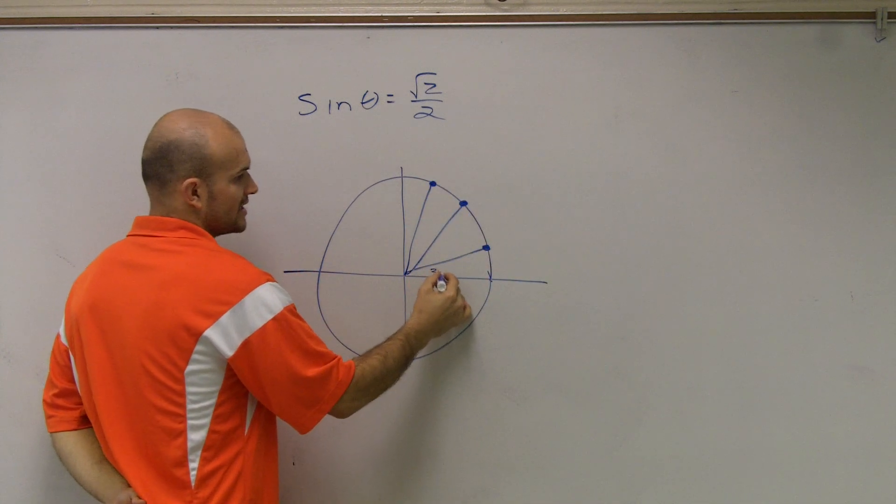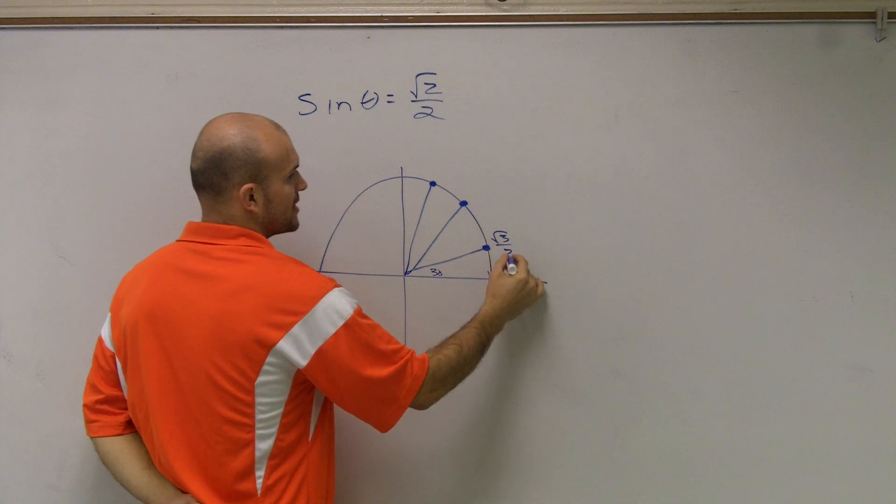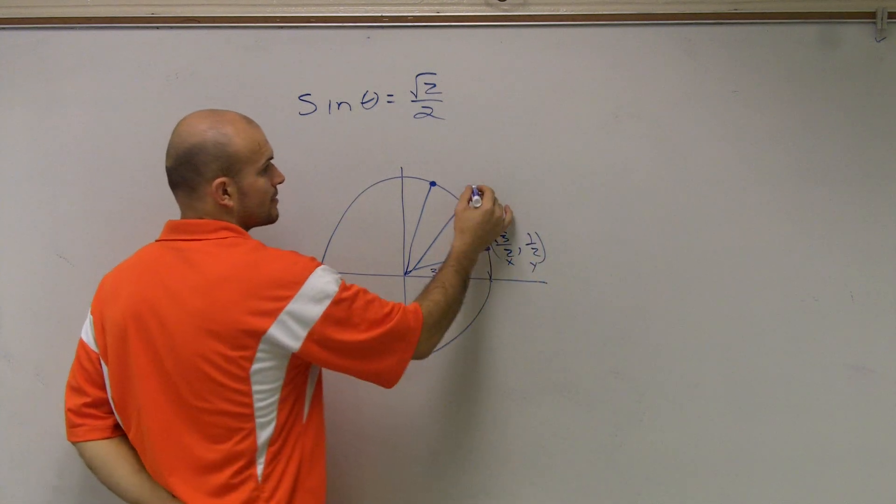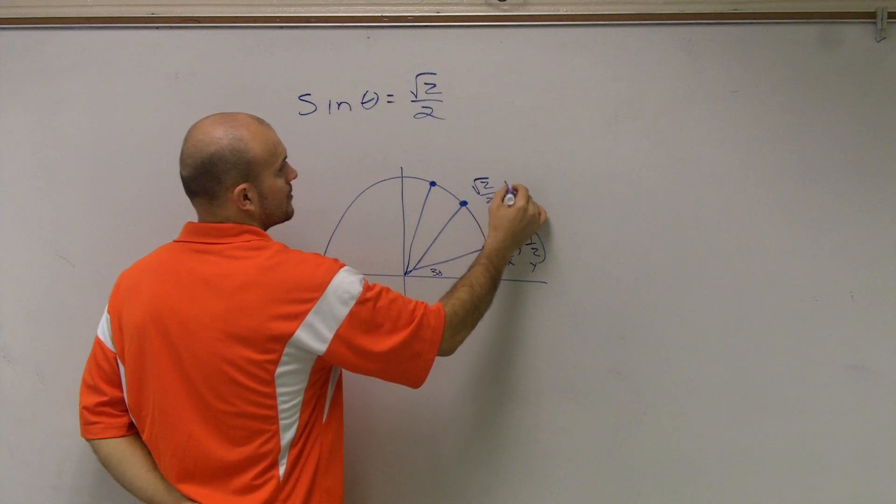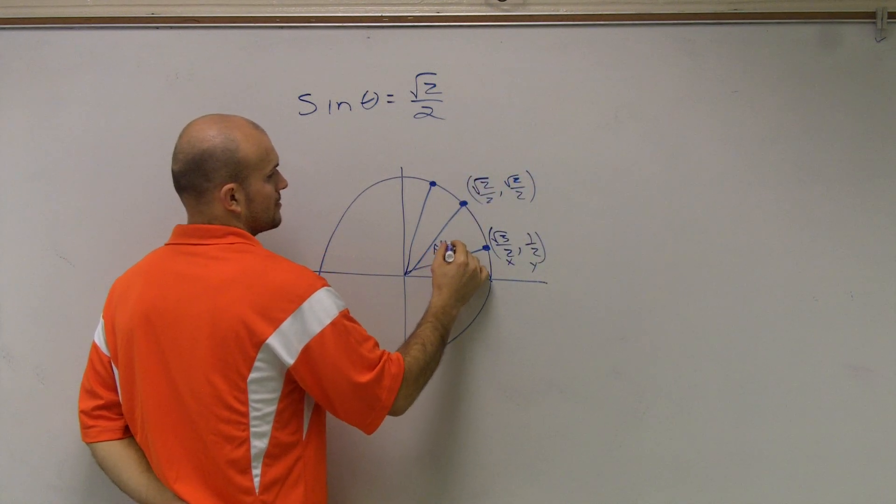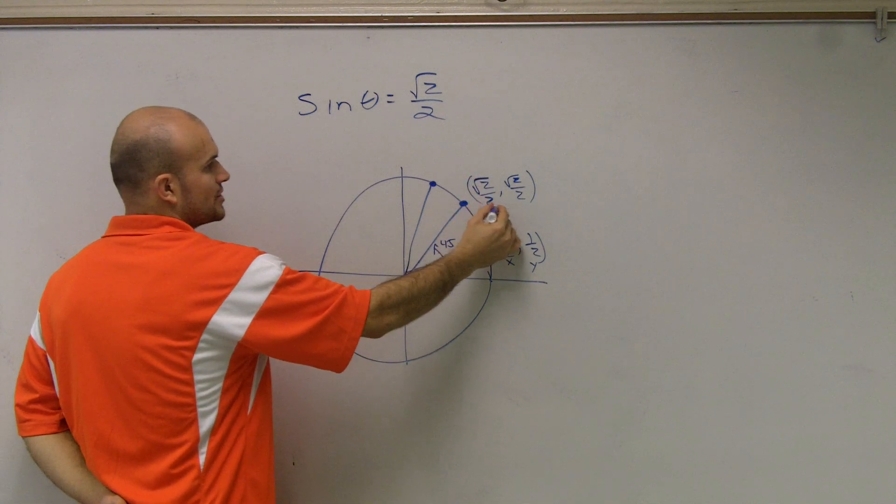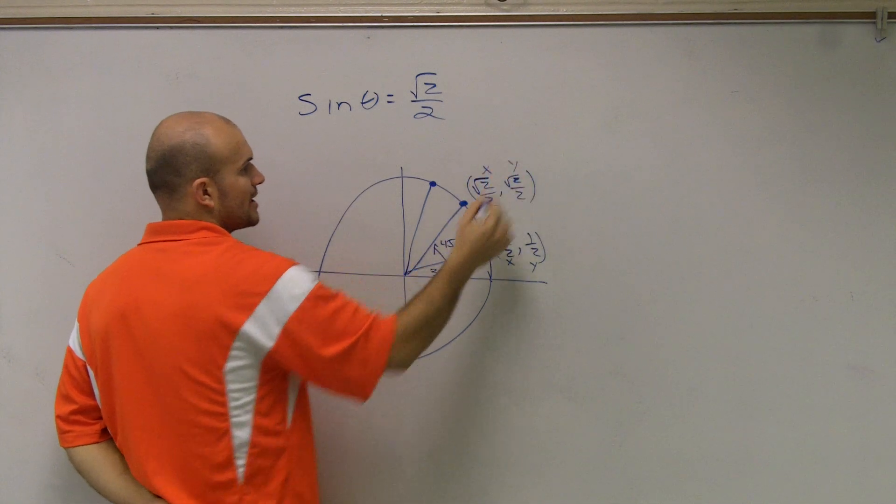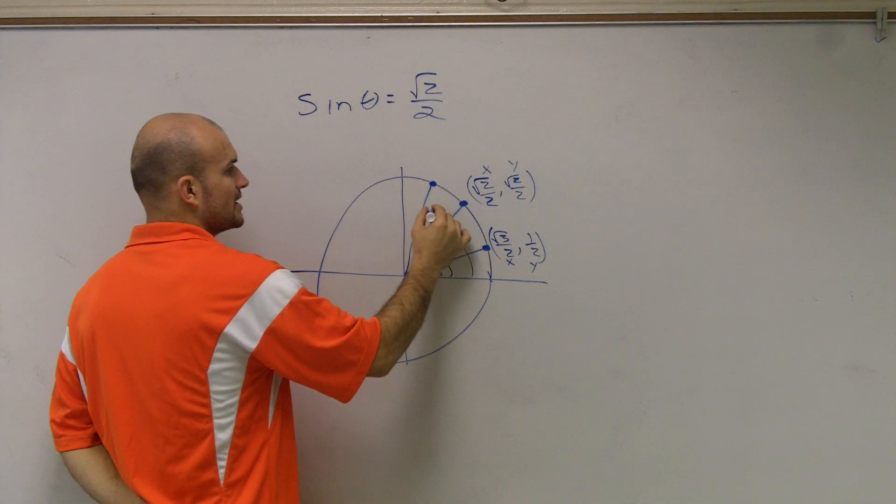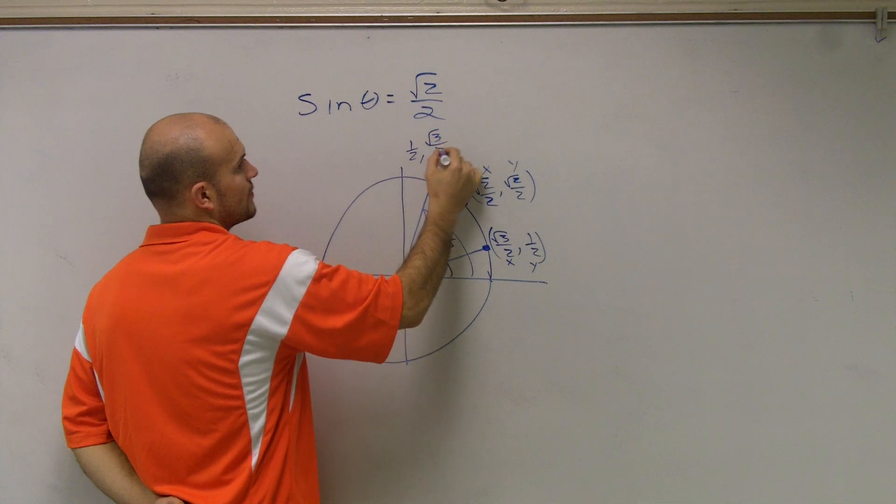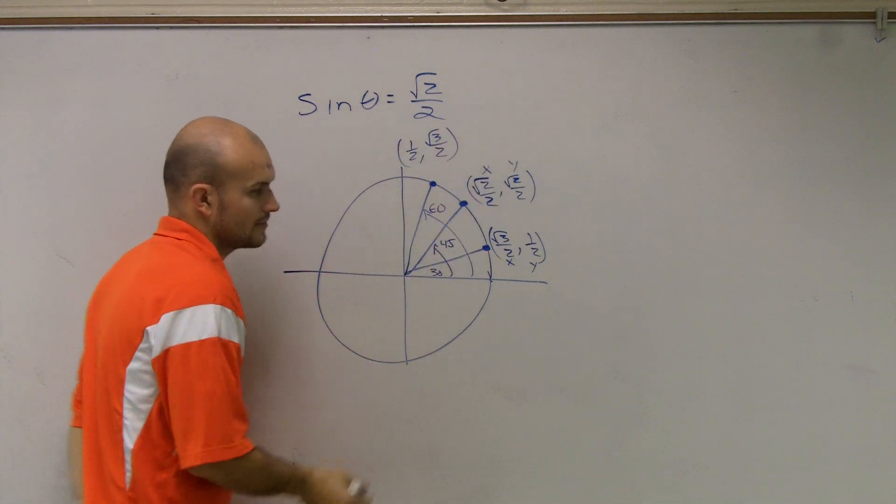When it's 30 degrees, I know that this is radical 3 over 2, comma, 1 half, where that corresponds to your x and y. For 45 degrees, it's radical 2 over 2, comma, radical 2 over 2, where that's your x and your y coordinate. And then for 60 degrees, we have 1 half, comma, radical 3 over 2.